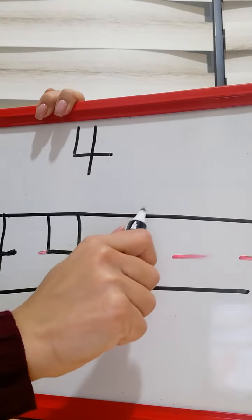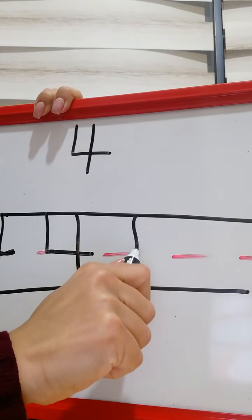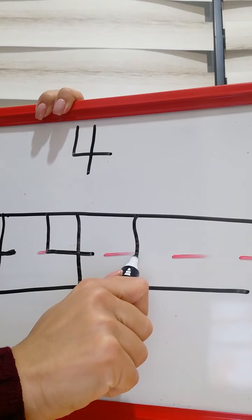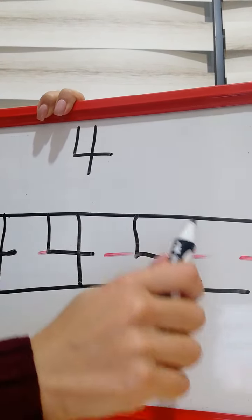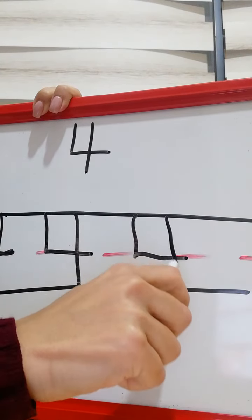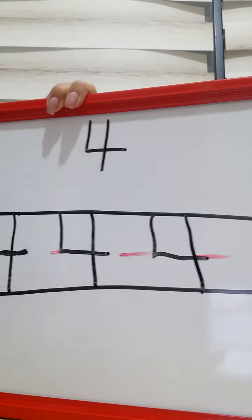So one more time. A vertical line. You stop on the middle line. Then a horizontal line. Then you go across. So this is number four.